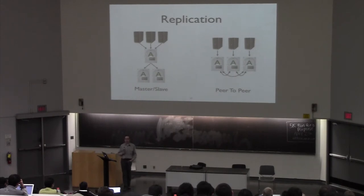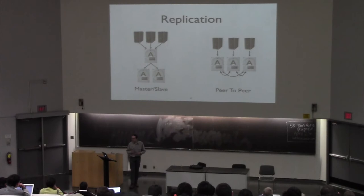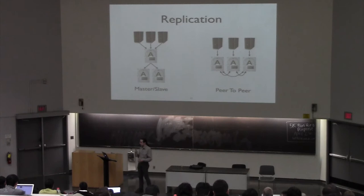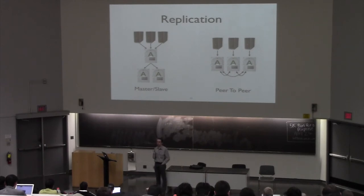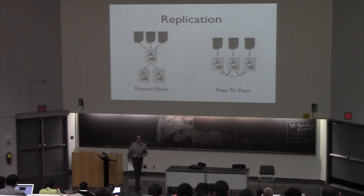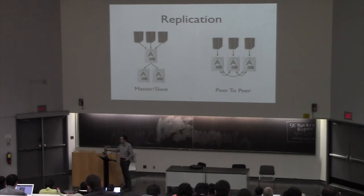Who's taking distributed systems at the same time? Quite a few of you. Why would you want to do master-slave replication? It's easier to deal with consistency issues — because all interactions go through a single node, that node can easily keep track of consistency. What are the slaves typically responsible for? Serving reads. But what's a potential limitation? Stale data — the replication may not happen immediately, so slave nodes may not be precisely up to date, and you might get slightly inconsistent data.